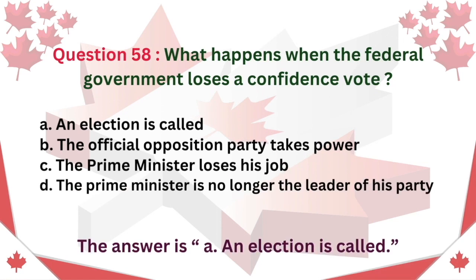Question 58. What happens when the federal government loses a confidence vote? A. An election is called B. The official opposition party takes power C. The Prime Minister loses his job D. The Prime Minister is no longer the leader of his party. The answer is A. An election is called.